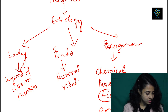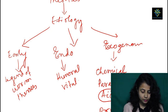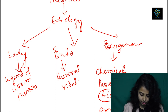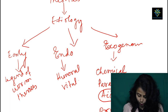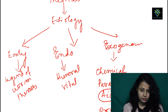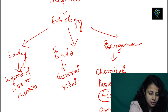Under the exogenous heading there are lots of theories. We have chemical theory, parasitic theory, acidogenic theory, proteolytic theory, and proteolytic chelation theory. Just remember, the most accepted one is the acidogenic theory.